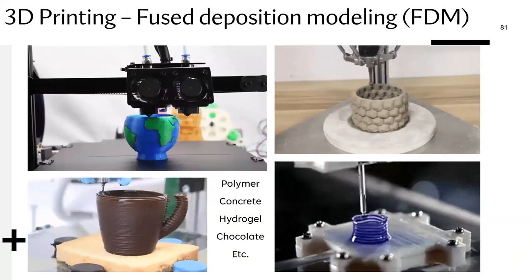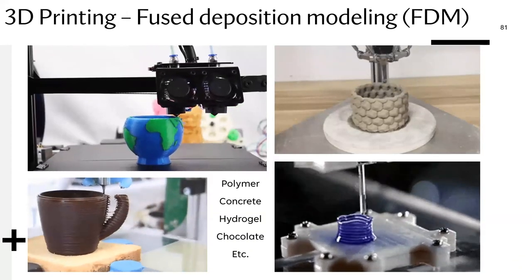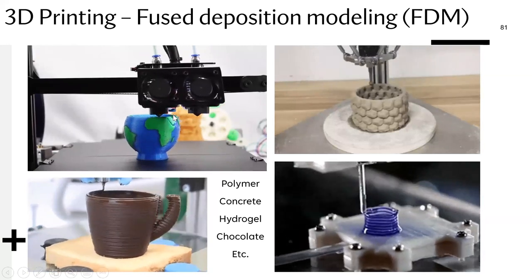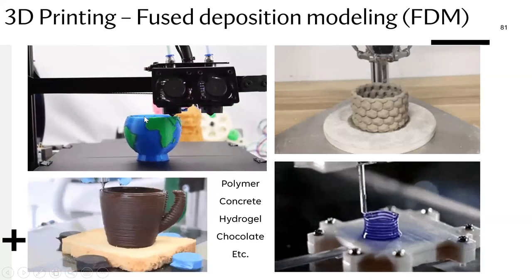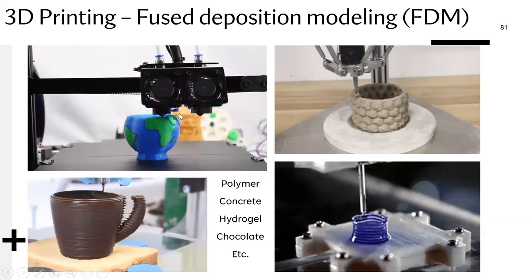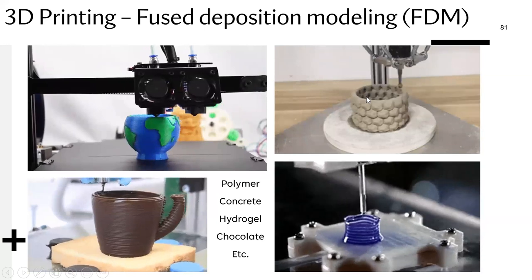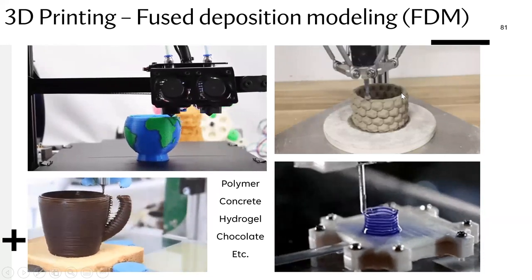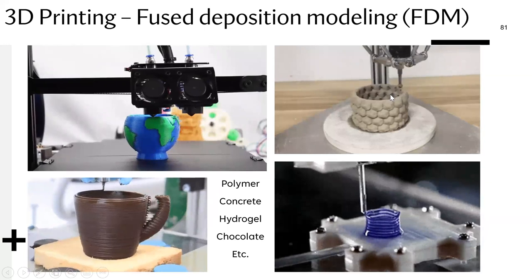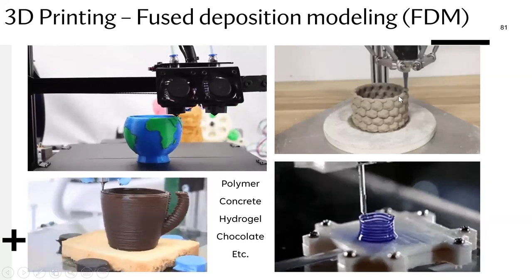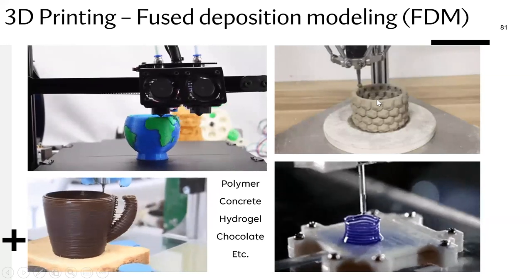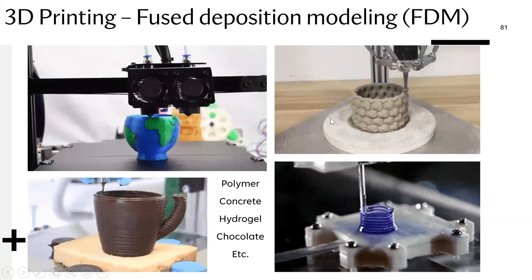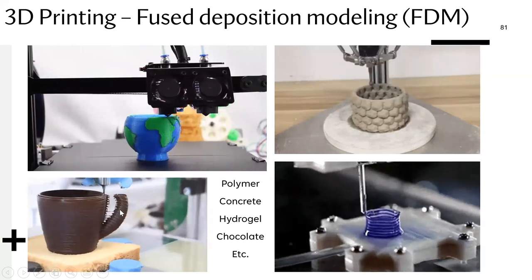These are all examples of zero-dimensional 3D printing processes. You can see the tip of the nozzle scanning the surface one point at a time — whether it be plastic or concrete. The tip of the nozzle extrudes material and gradually builds up the object, scanning every cross-section one point at a time until it builds up the overall object.